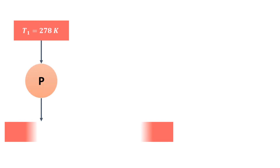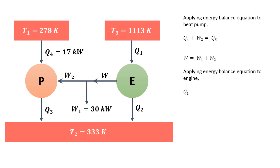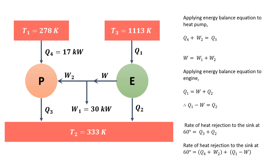Now let us see the flow diagram so that we can easily understand the working and solve the example. We have a heat pump and a heat engine. The heat engine receives heat from the reservoir maintained at 1113 Kelvin and rejects heat to a sink maintained at 333 Kelvin. The work developed by the engine is partly used to drive the heat pump and partly to drive some machinery. The heat pump has a source at 278 Kelvin and a sink at 333 Kelvin.